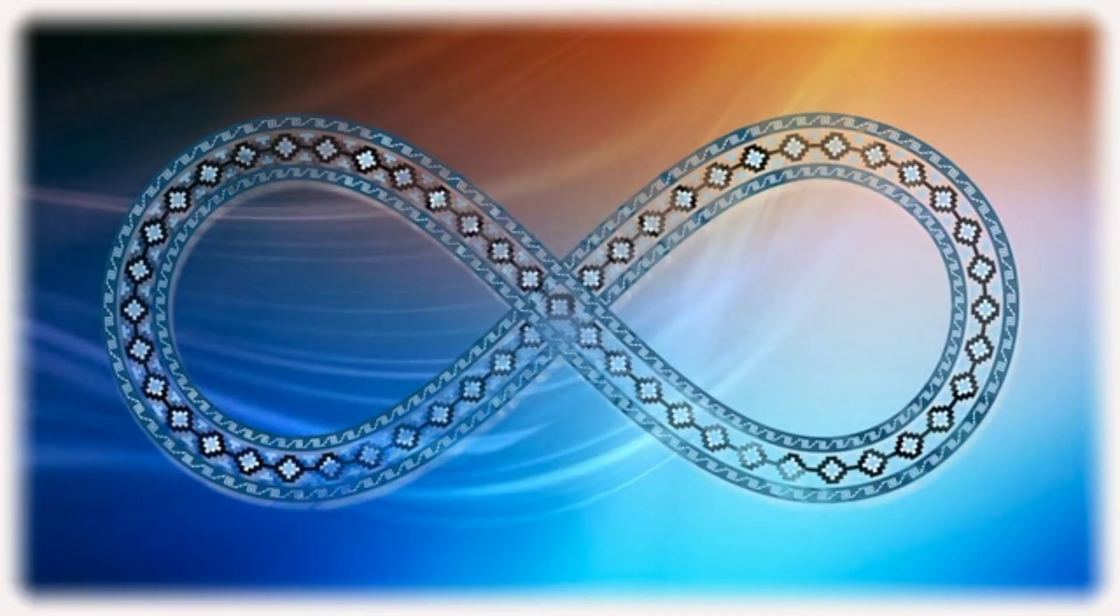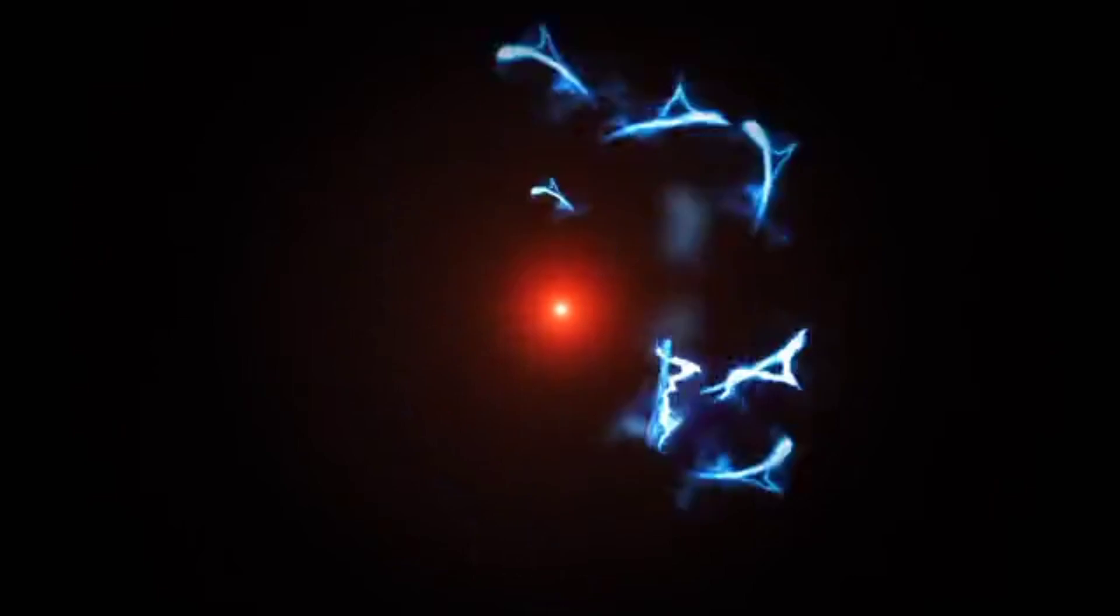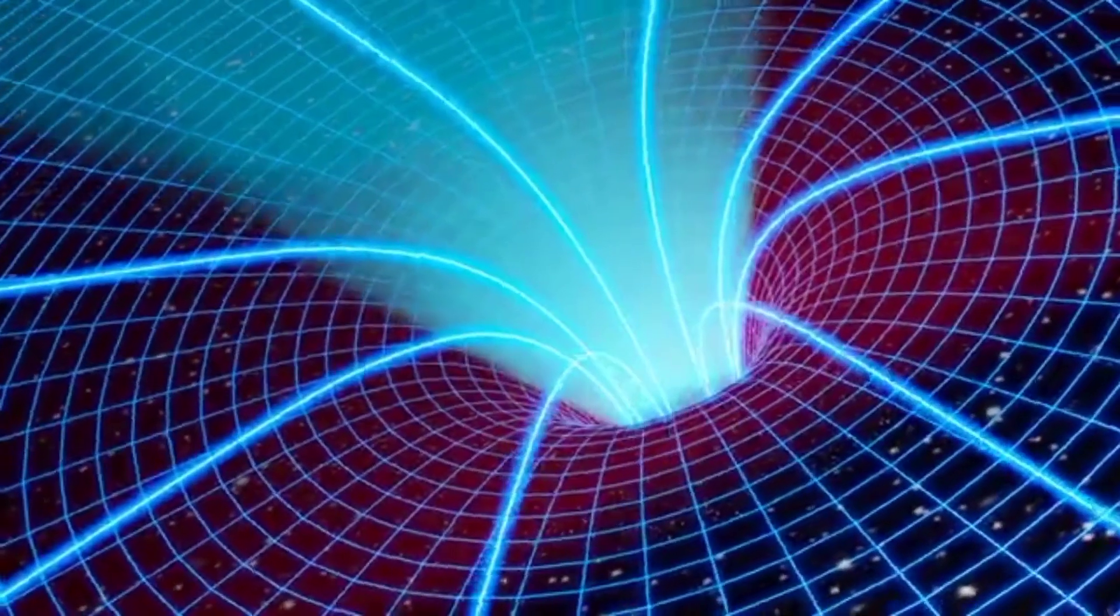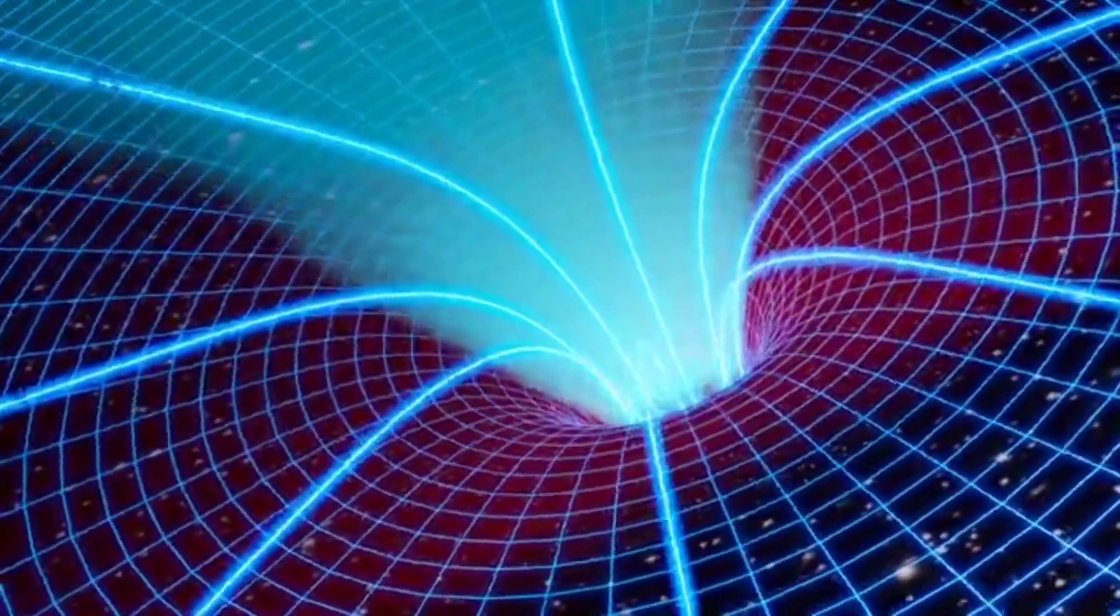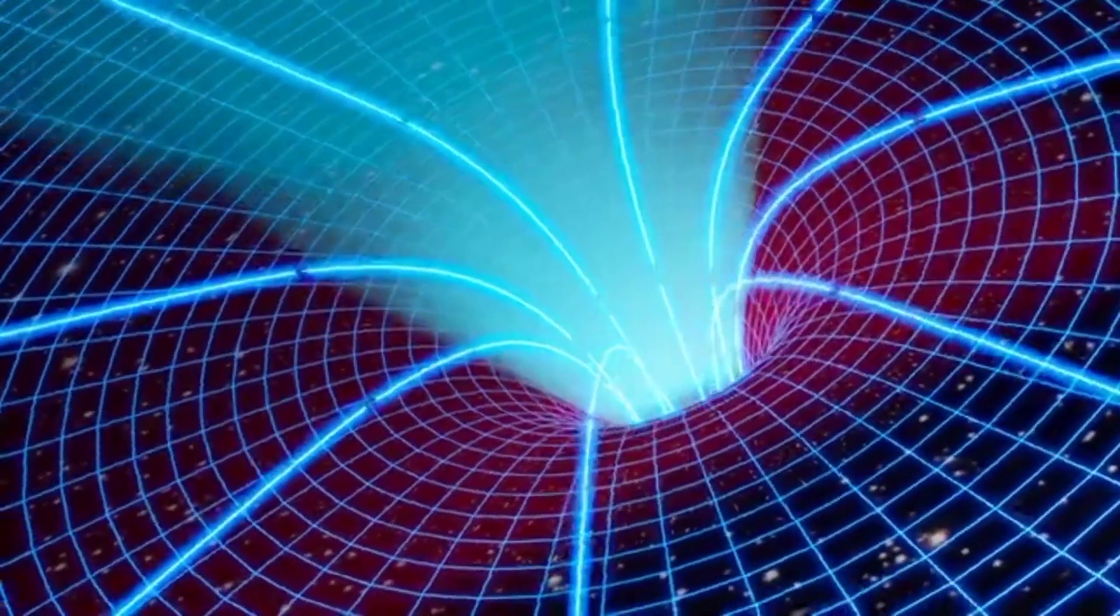Superposition means quantum systems can exist in multiple states simultaneously. For example, an electron can exist in a superposition of being in two different places at the same time.